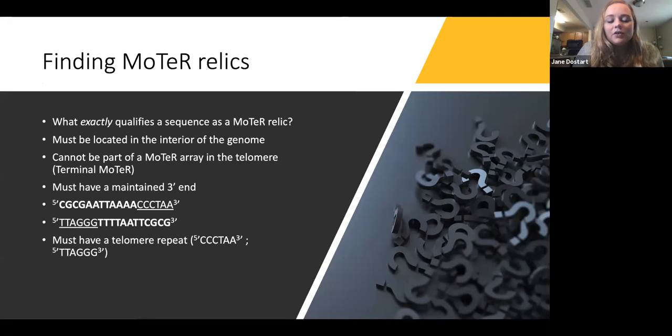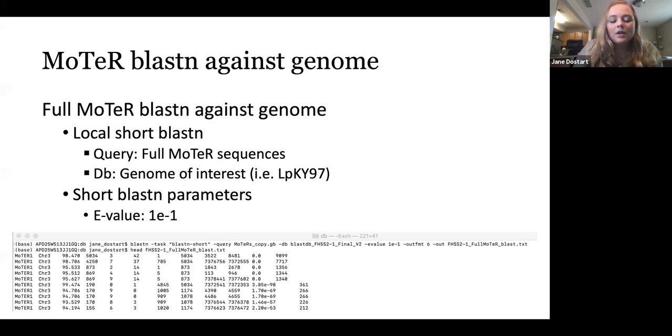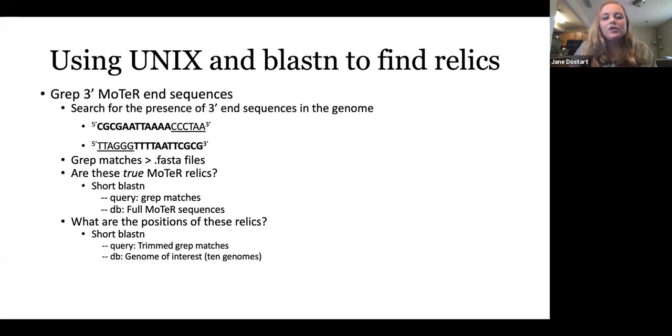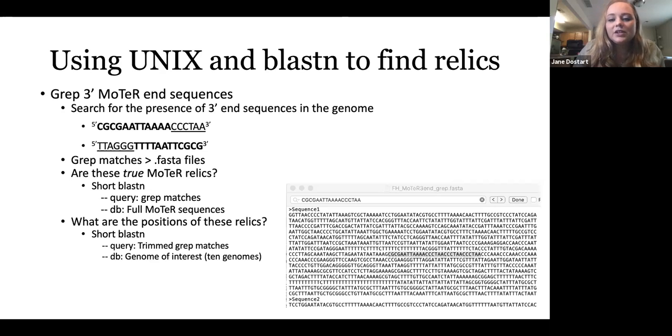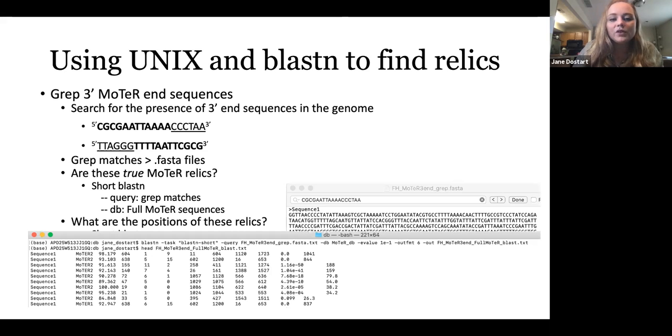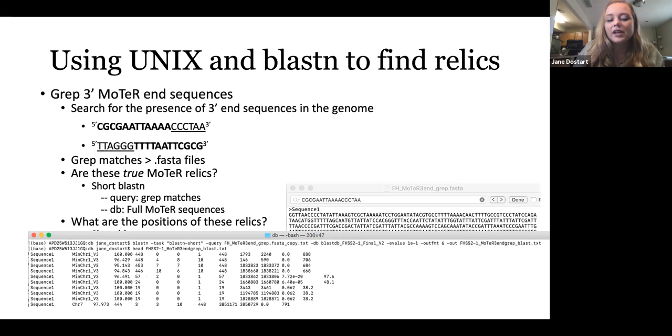So first I decided obviously it had to be located in the interior of the genome and could not be part of a MoTeR array in the telomere. It had to have that maintained three prime end sequence, which you can see noted below here. And it also had to have a telomere repeat. I then did a series of local blasts, where first I blasted full MoTeR 1 and MoTeR 2 sequences against the genome. I used the task short nucleotide blast with an e-value of 1e-1. I also used the Unix command grep to search for exact matches of the three prime end sequence and transformed these into FASTA files.